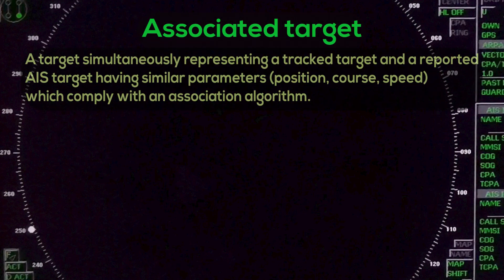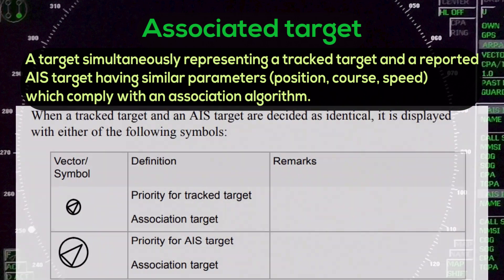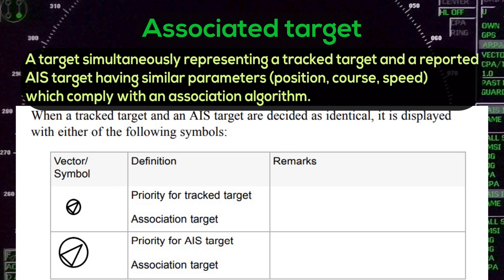Associate Target: A target simultaneously representing a tracked target and a reported AIS target having similar parameters — Position, Course, Speed — which comply with an association algorithm.